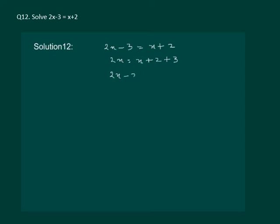We get 2x minus x is equal to 5. 2x minus x is equal to x. So we have x is equal to 5 as the required answer.